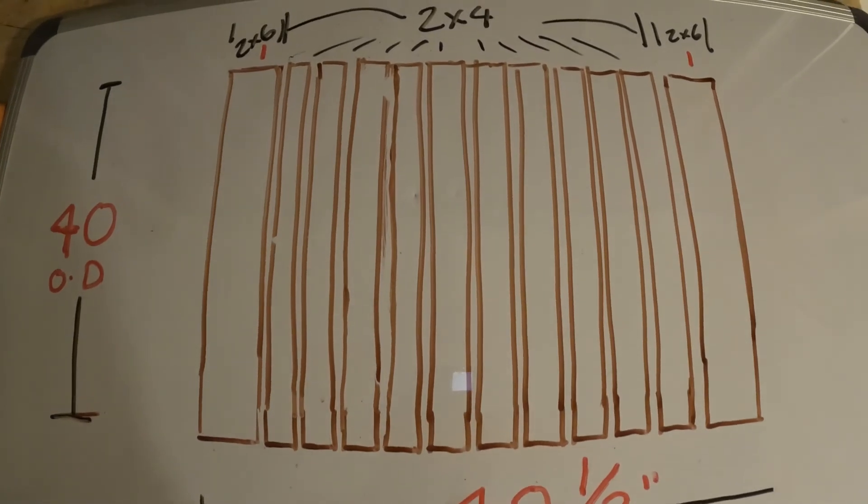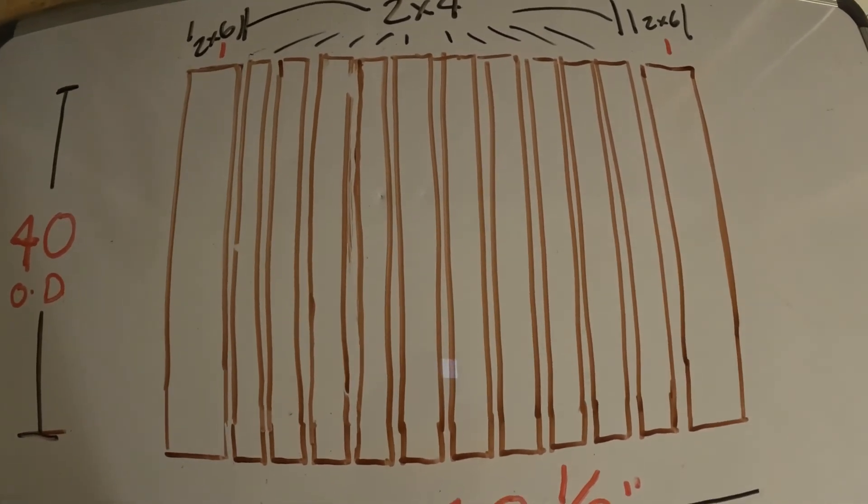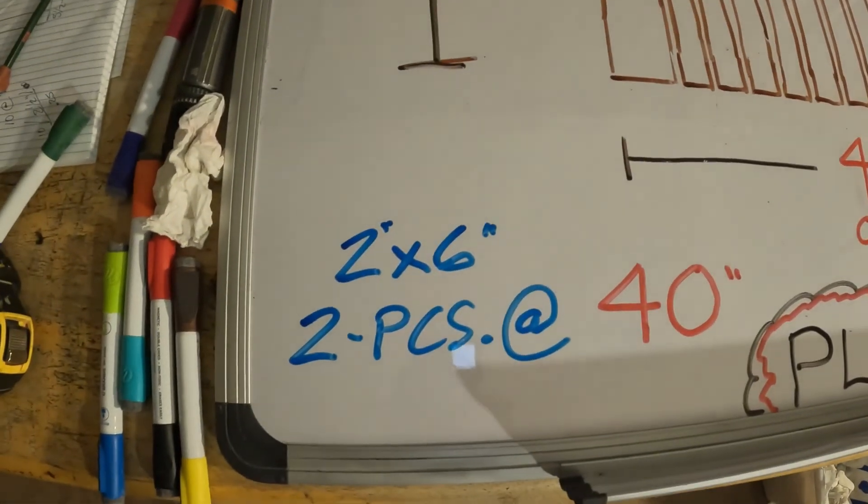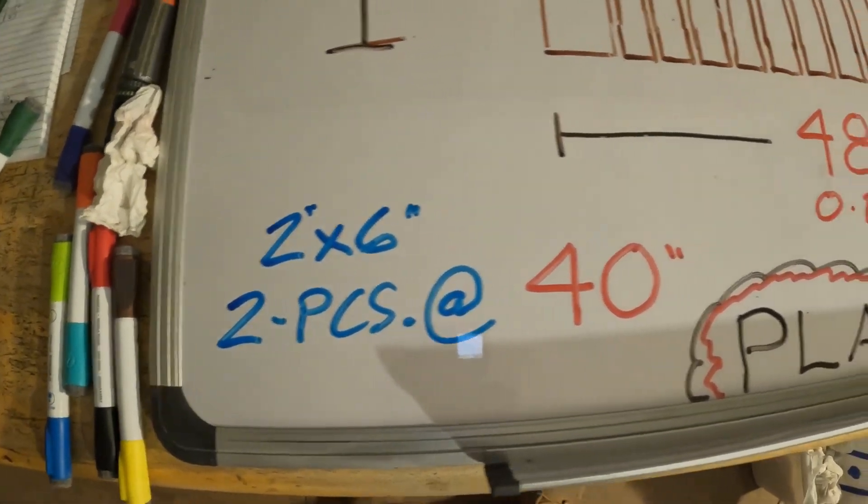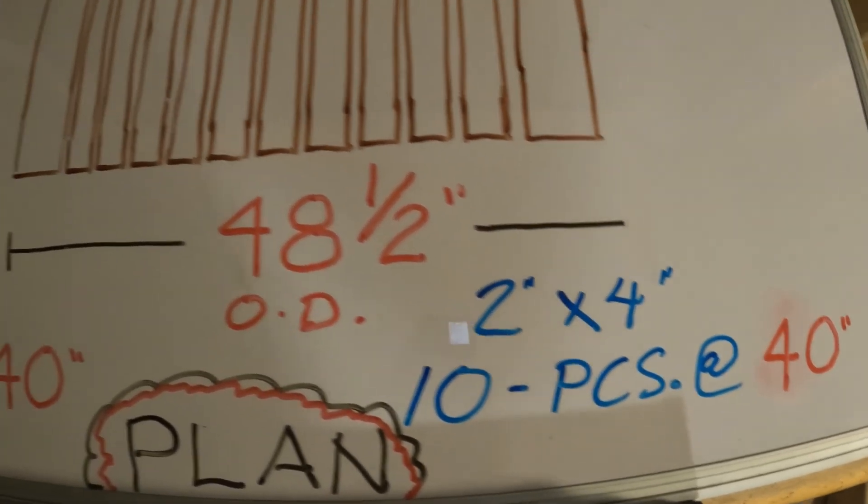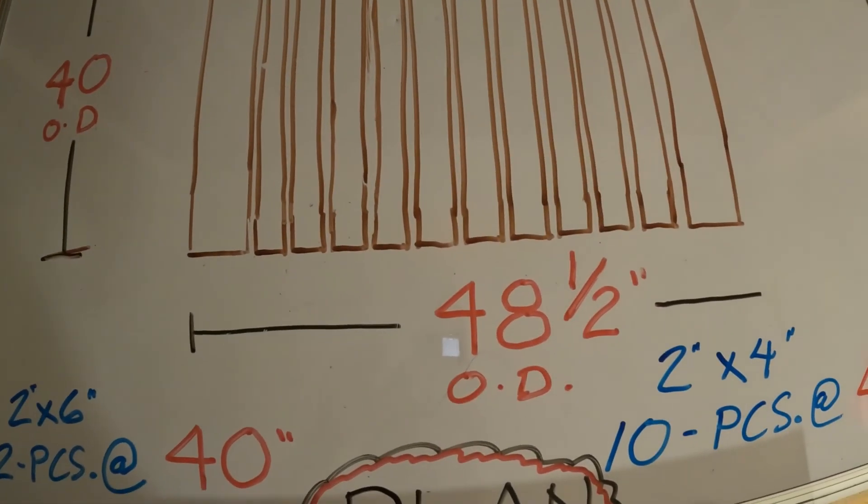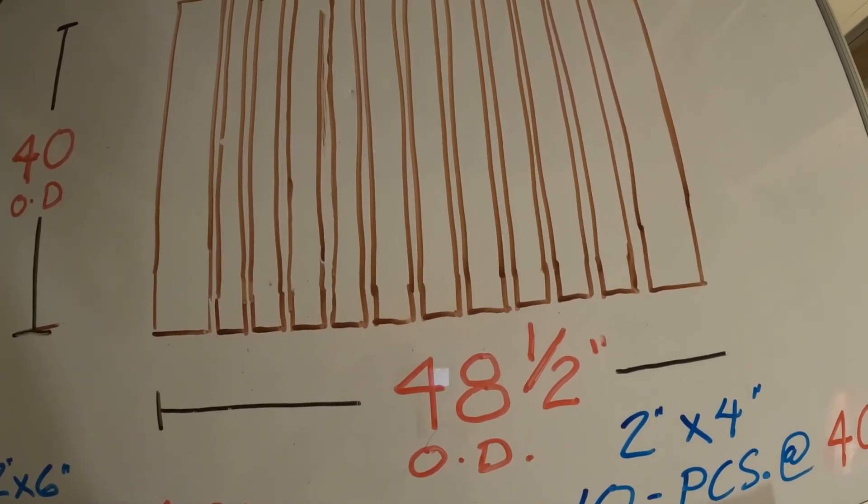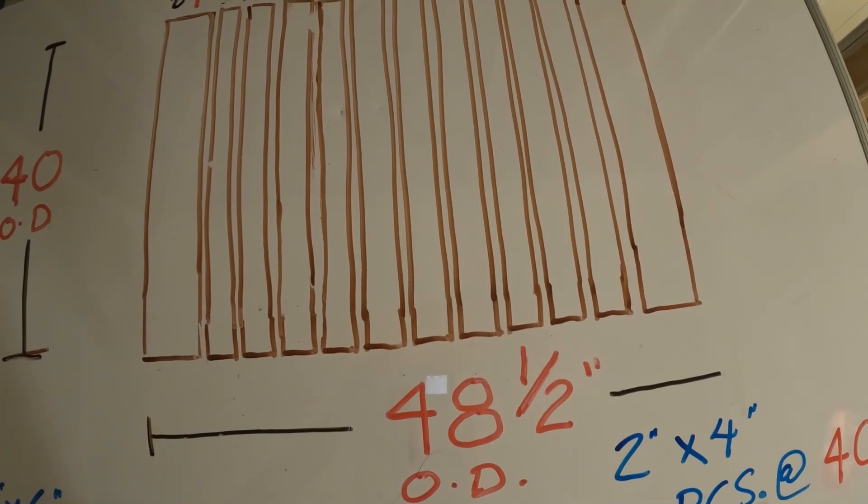10 two by fours and two two by sixes. Two two by sixes at 40 inches, 10 two by fours at 40 inches. 40 by 48 and a half inch platform with a 275 gallon water tank.